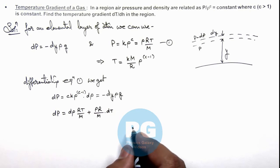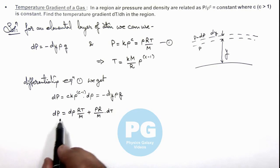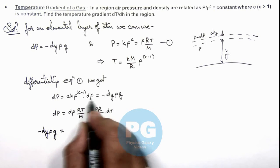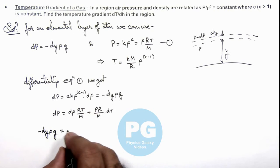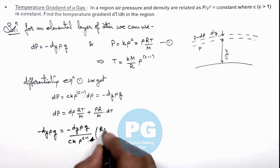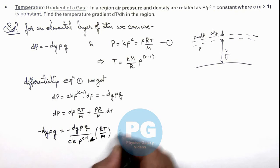Now in this situation here, if we substitute the values, here you can see this d p we can write as minus d y ro g. And d ro we can substitute from this relation which is minus d y ro g divided by c k ro to power c minus 1 multiplied by d ro. This d ro we already substituted multiplied by r t by m, plus d t.